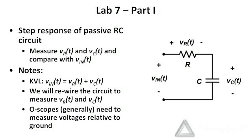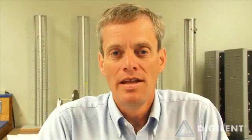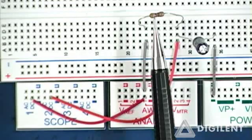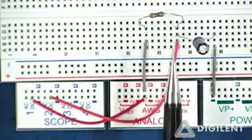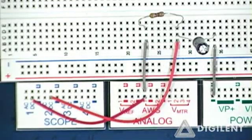That will give us some more practice in working with oscilloscopes and how to make transient measurements. Now let's look at the implementation of the circuit and measure the voltage responses across the resistor and capacitor. This is our RC circuit, consisting of a resistor and a capacitor in series.